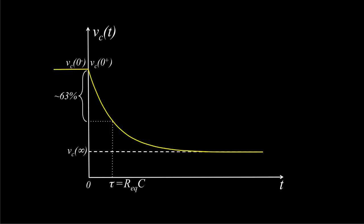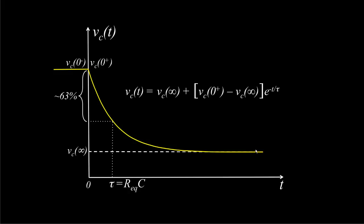The mathematical equation that determines the voltage across the capacitor requires knowing: the final voltage across the capacitor as time approaches infinity, the voltage across the capacitor right at the time the switch is changed, and the time constant. All voltages and currents in the circuit have this mathematical form, so for any other voltage or current, we need to determine the value at t equals infinity, the value right after switching, and the time constant.